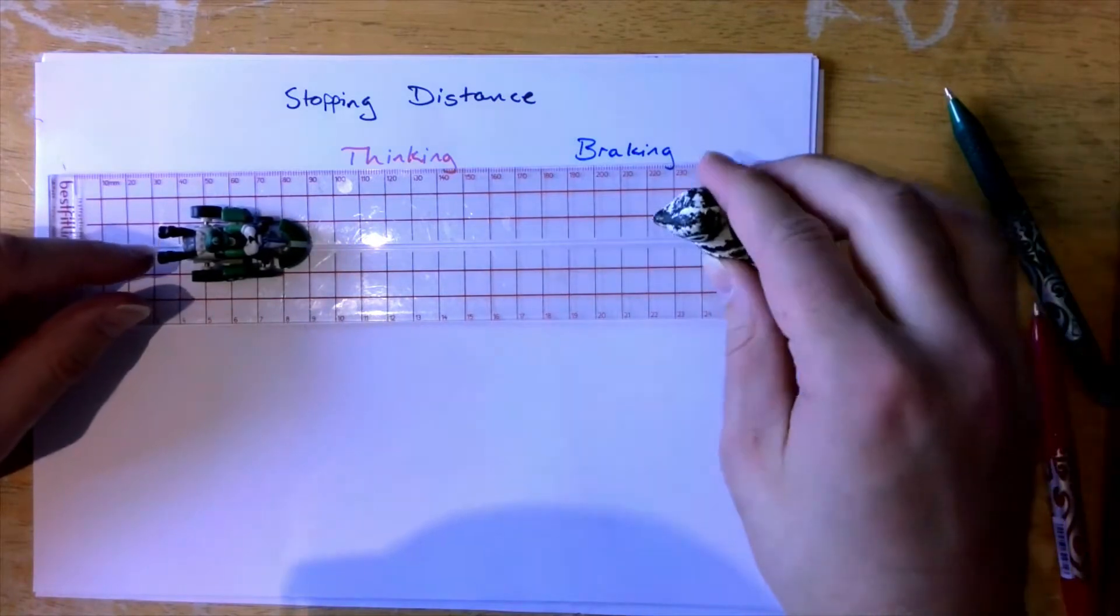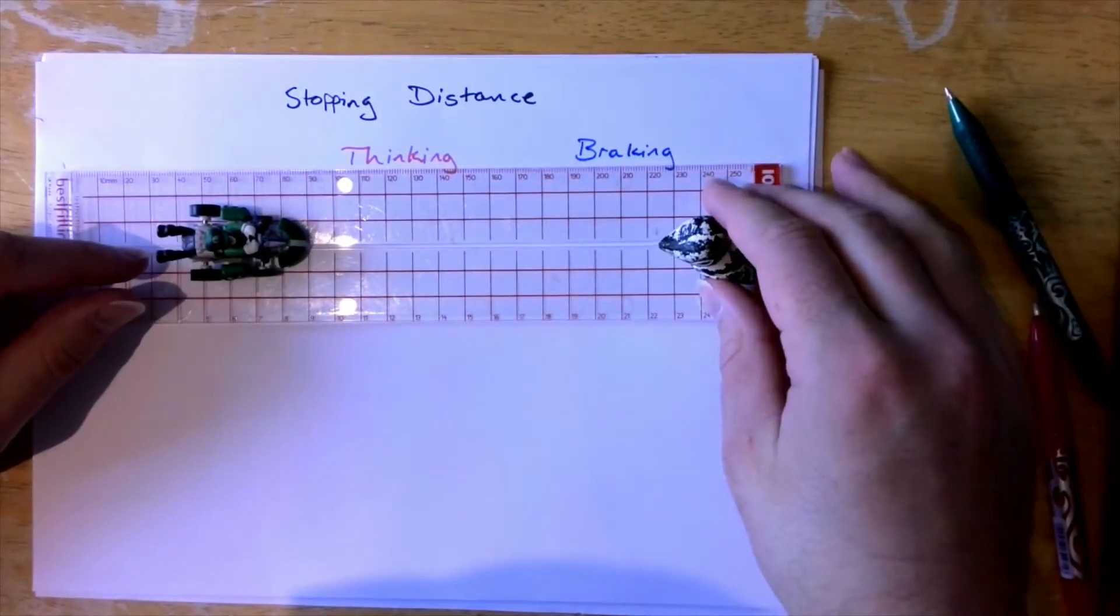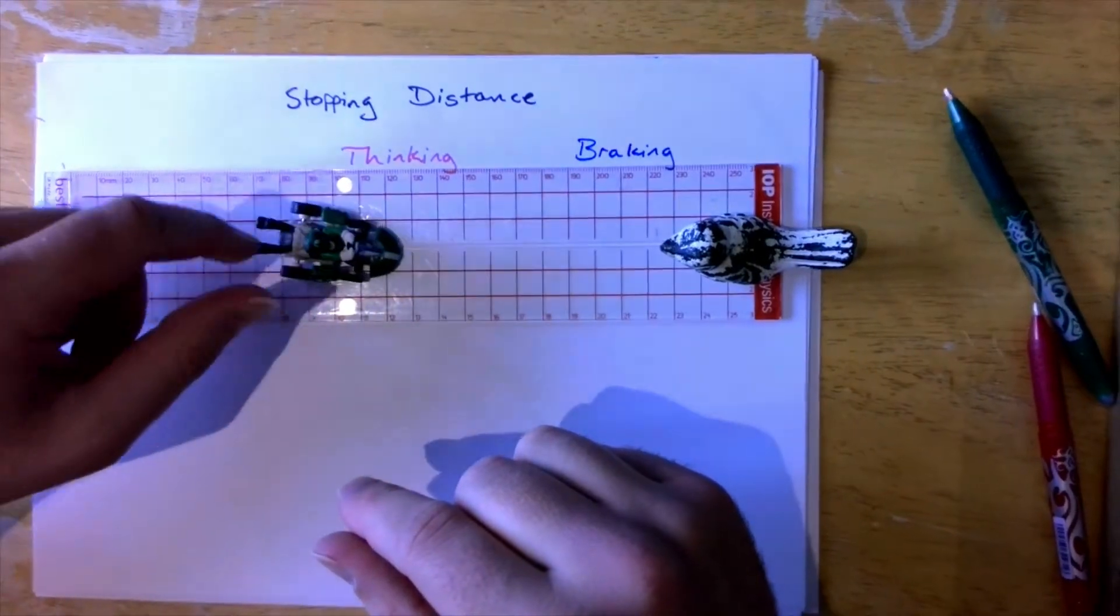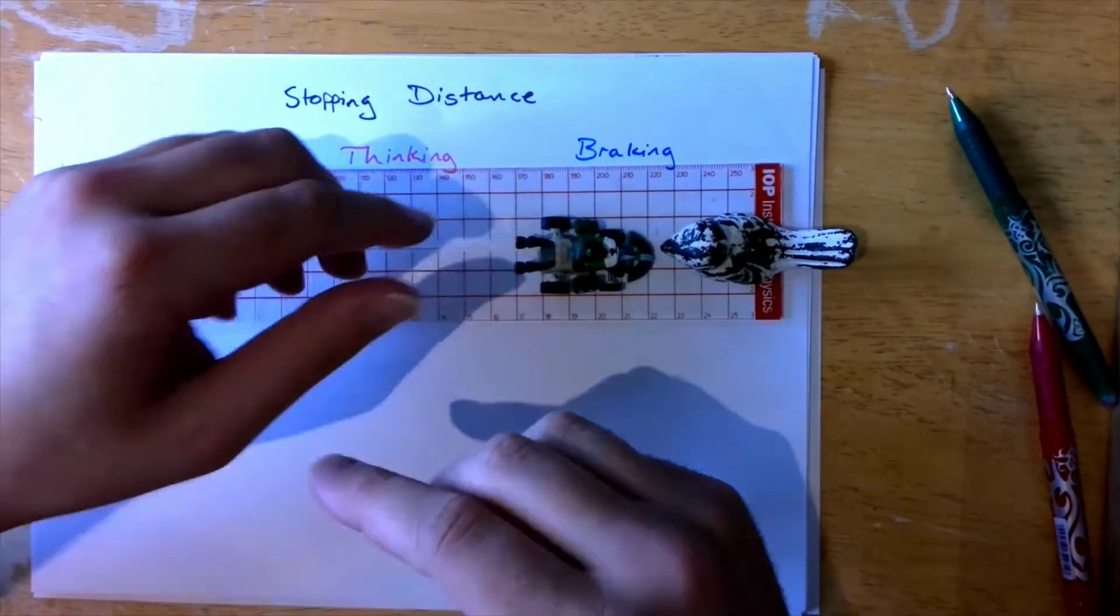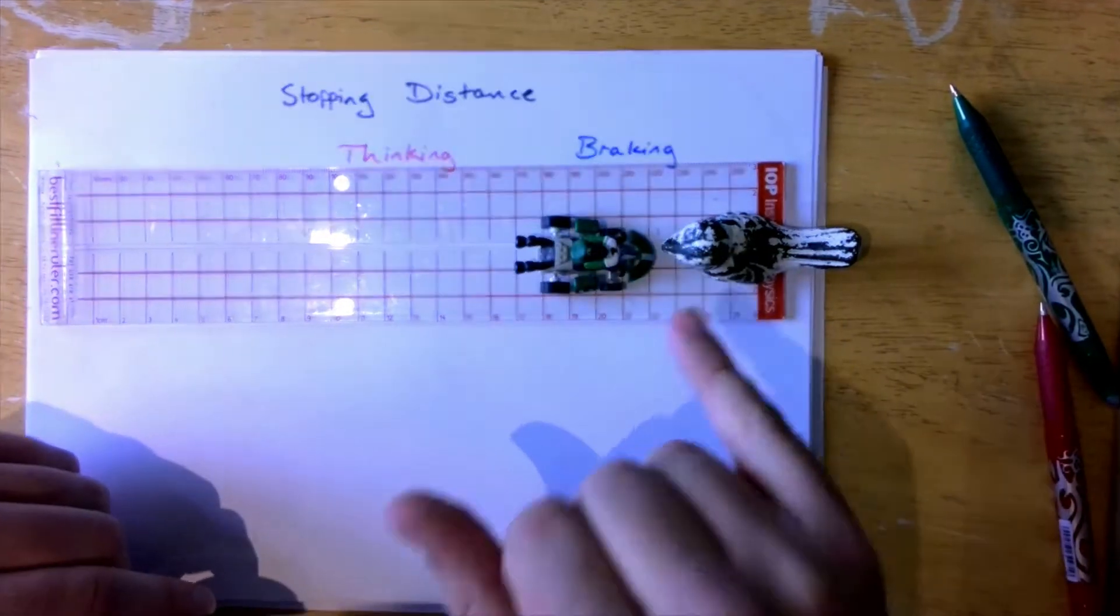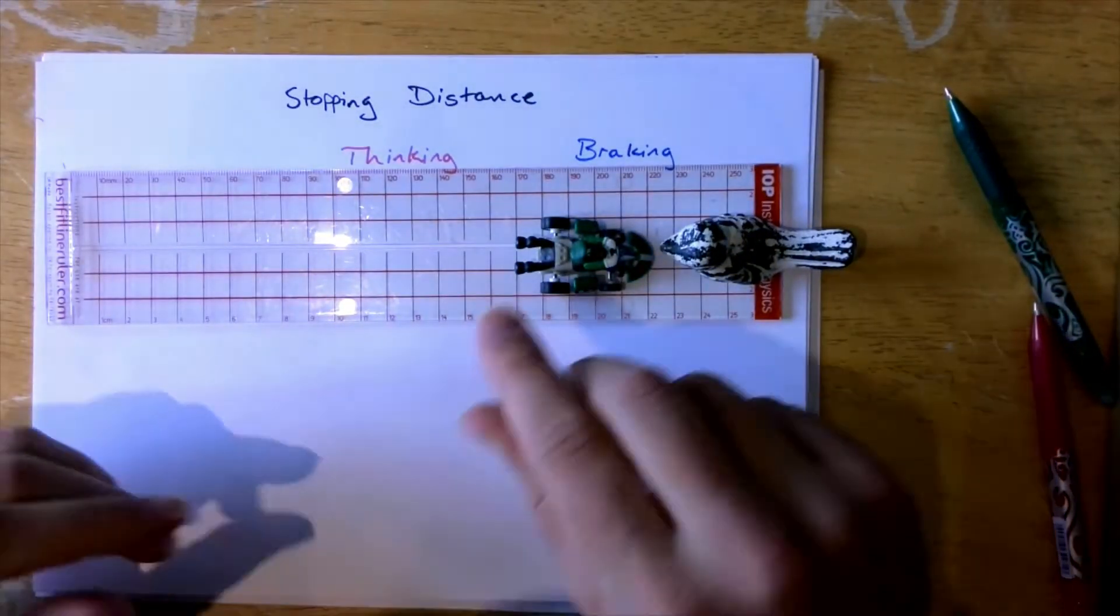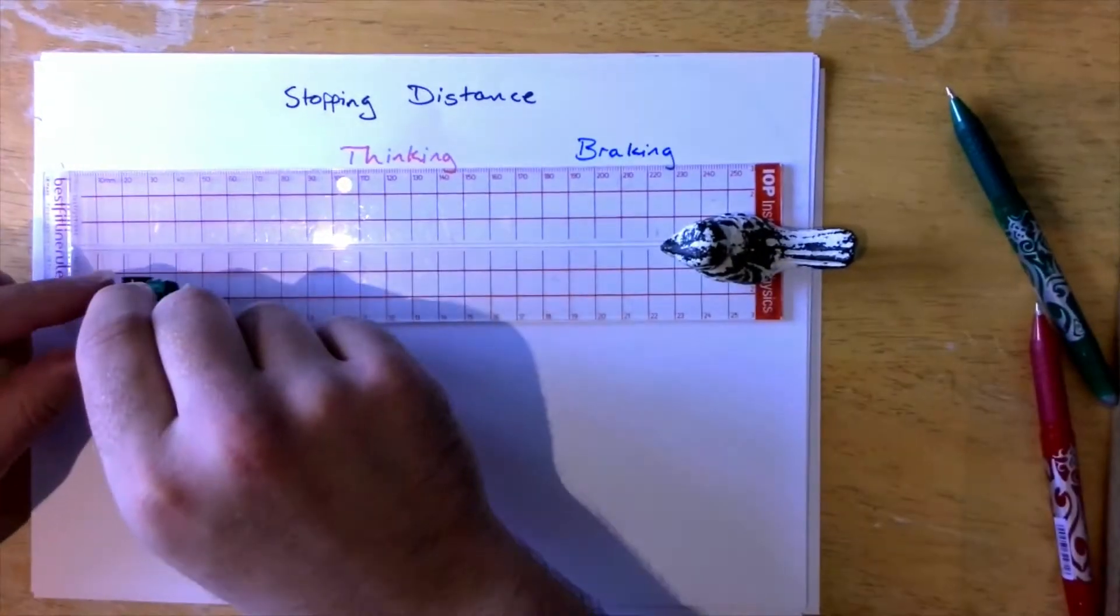When the hazard appears the driver is going to react and then slam on the brakes so that hopefully can stop before hitting the hazard. So we can actually look at the distances that are involved there.